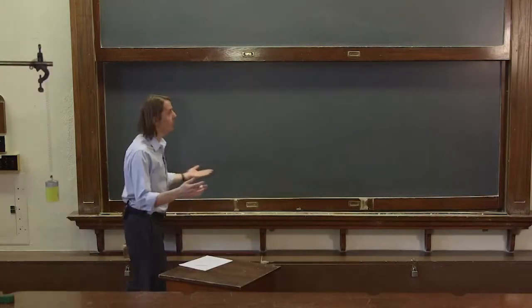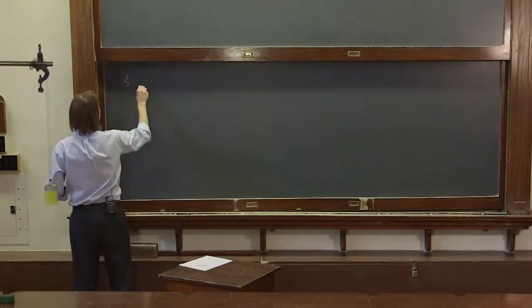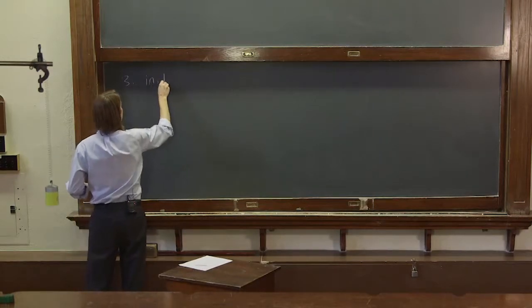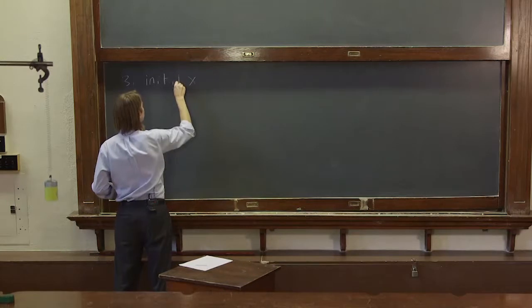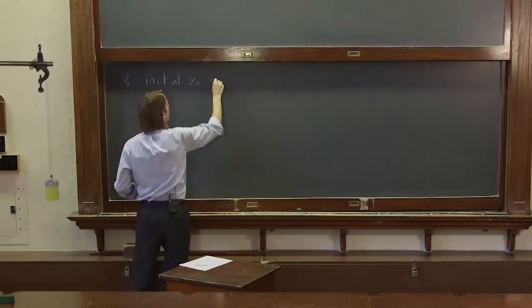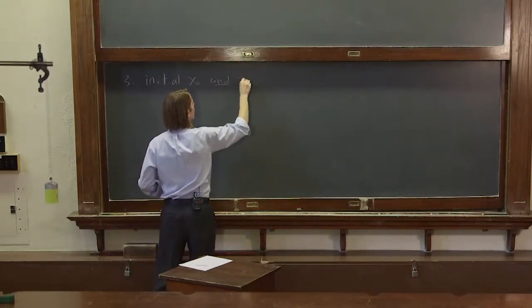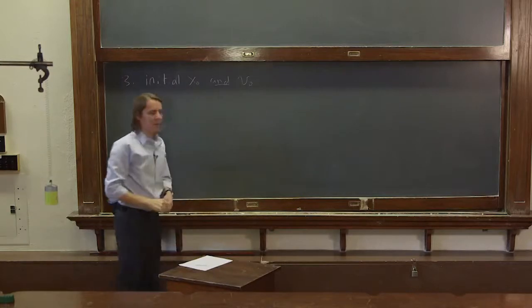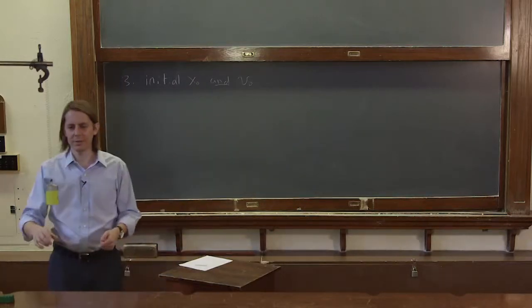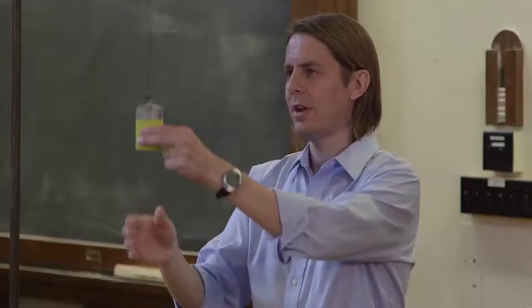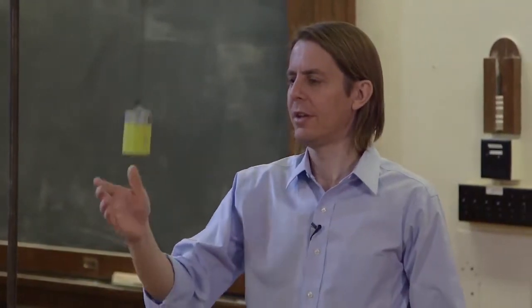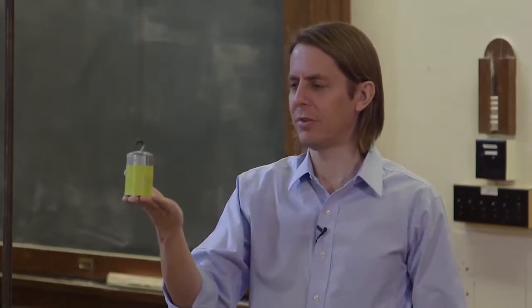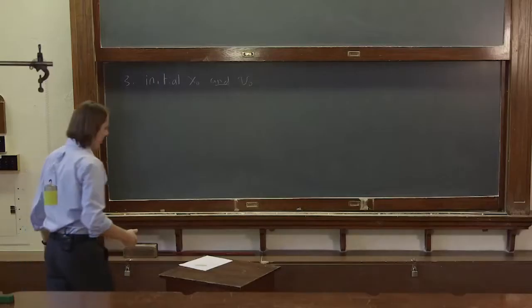We're having so much fun, let's do a third initial condition. Three, an initial x-naught and v-naught. That would look something like this, if I were to give it an x-naught like that and throw it up in the air. That would be an initial x-naught and v-naught. So let's see if we can describe that motion.